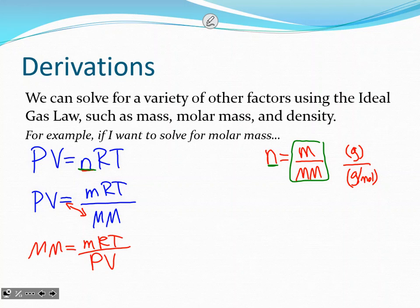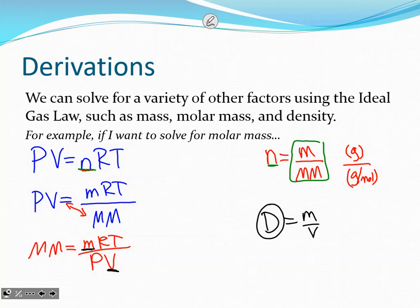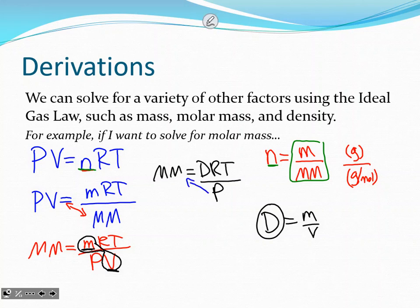Notice that in the molar mass equation we have mass on top and volume on the bottom — mass divided by volume gives you density. So we substitute density in: molar mass = density × RT / P. And if you need to solve for density, rearrange to get: density = molar mass × pressure / (RT).